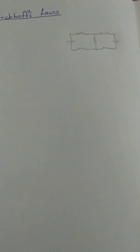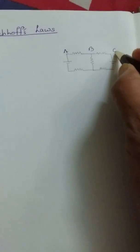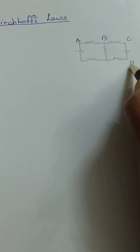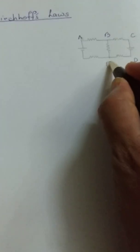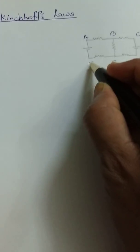Today we are going to discuss Kirchhoff's laws. For that we have a circuit. Let us label the nodes as A, B, C, D, E, and F.